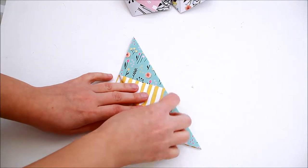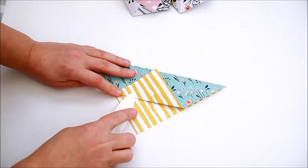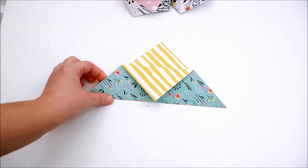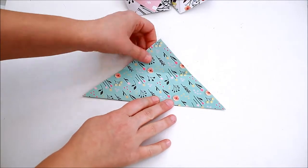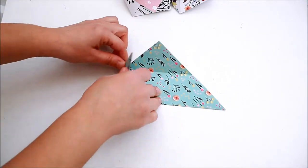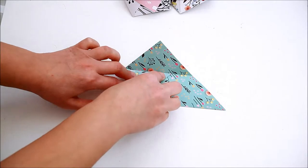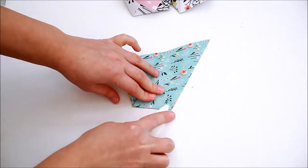Fold one of the corners towards the center. Then fold the flaps towards the previous fold and tuck them underneath.